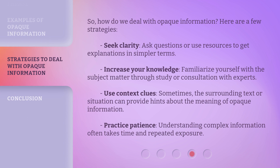So, how do we deal with Opaque Information? Here are a few strategies. Seek clarity: ask questions or use resources to get explanations in simpler terms. Increase your knowledge: familiarize yourself with the subject matter through study or consultation with experts. Use context clues: sometimes the surrounding text or situation can provide hints about the meaning of Opaque Information. Practice patience: understanding complex information often takes time and repeated exposure.